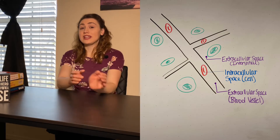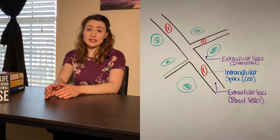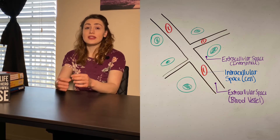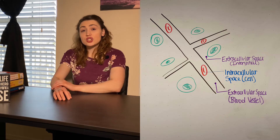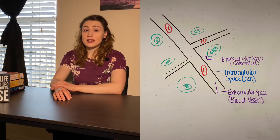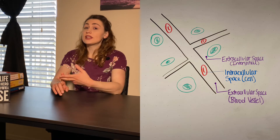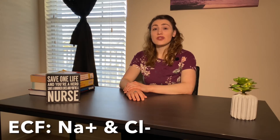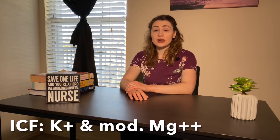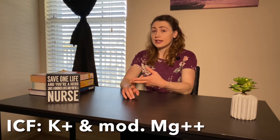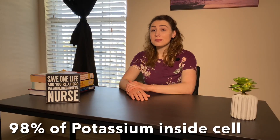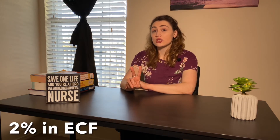Body fluids are divided between the intracellular and the extracellular fluid compartments. The intracellular fluid compartment includes all the fluid that's inside the cell, and the extracellular fluid compartment includes all the fluid that's outside the cell — fluid in the tissues, which we call interstitial, and fluid in the bloodstream. The extracellular fluid compartment is high in things like sodium and chloride, while the intracellular fluid compartment is high in potassium and has a moderate amount of magnesium. 98% of body potassium is stored inside the cell, leaving only about 2% to the extracellular fluid, meaning the bloodstream has a low amount of potassium in it.